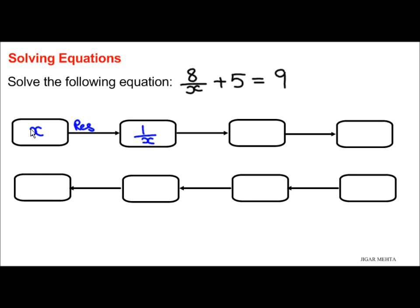Now I need 8 over x from 1 over x. For that I need to multiply 1 over x with 8. So 1 over x times 8 gives me 8 over x.